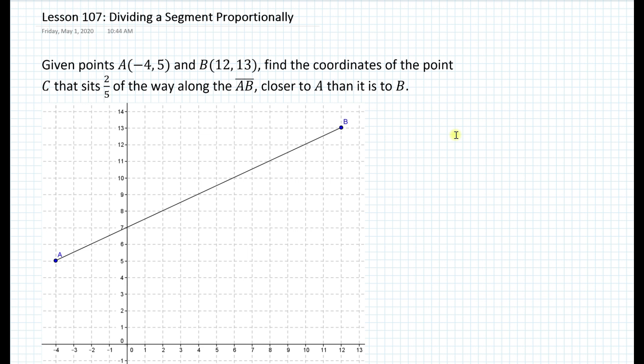Given points A(-4, 5) and B(12, 13), find the coordinates of the point C that sits 2 fifths of the way along segment AB closer to A than it is to B.